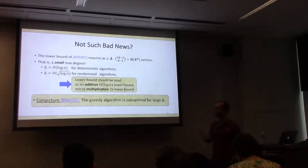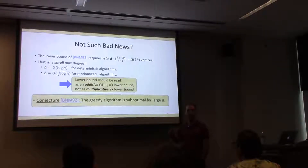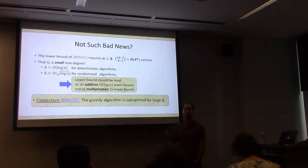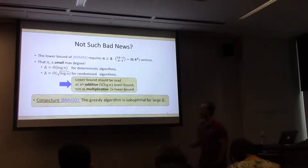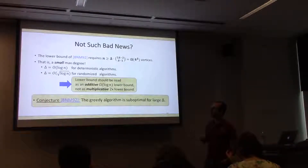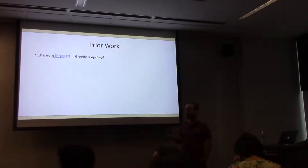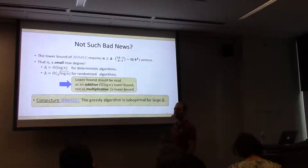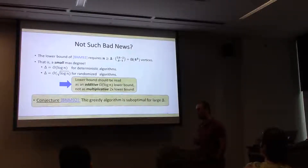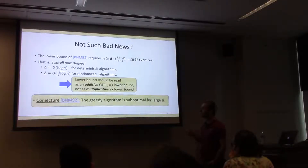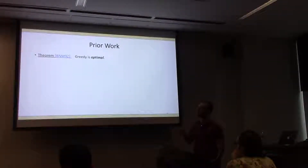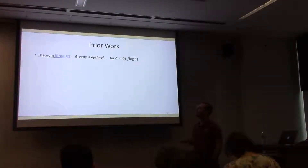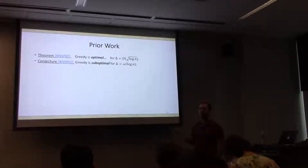Bartal et al. in the same paper conjectured that if delta is little-omega of log n, you can get one-plus-little-order-of-one competitive. To recap: Bartal et al. showed the greedy algorithm is optimal assuming delta is not too large, and they also conjectured that greedy is suboptimal if delta is at least little-omega of log n.